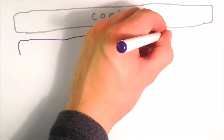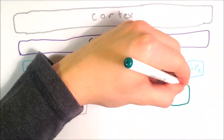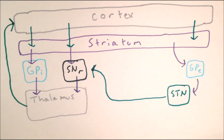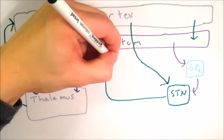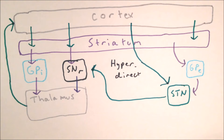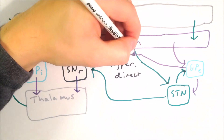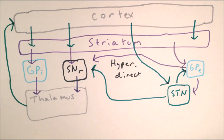Since the original direct and indirect pathways model, we've also discovered additional connections within the basal ganglia. Three of the most important are an excitatory pathway from the cortex to the subthalamic nucleus known as the hyperdirect pathway, and an excitatory pathway from the subthalamic nucleus to the globus pallidus externa.